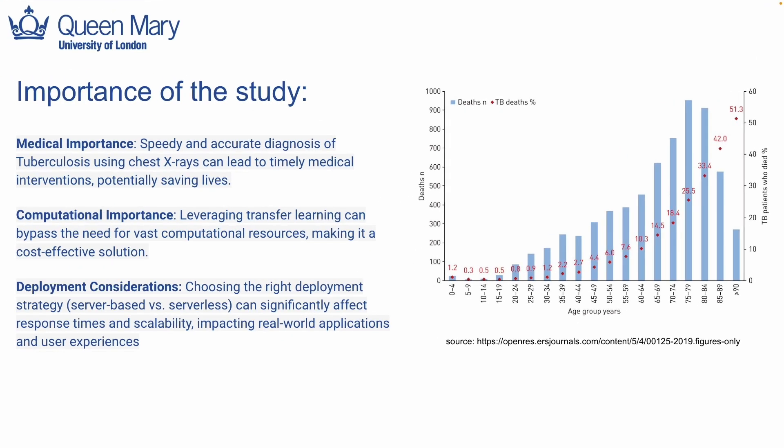From a tech angle, we have two main focuses. First, by using transfer learning we can work smart, not hard — we harness the power of established models, keeping the need for huge computational efforts low, making it efficient and cost-effective. Secondly, how we deploy our solution matters. Whether it's server-based or serverless can impact how fast it works and how well it scales, directly influencing patient care and user experience. The right choice here can make all the difference in practical settings.